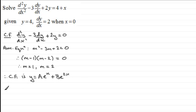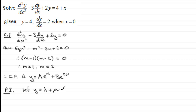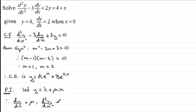Next we want to work out a particular integral — PI for short. Looking at the right-hand side, it's a linear function: 4 plus x. So what we do is let y equal a constant lambda plus another constant mu multiplied by x. That's our linear particular integral taking on that form. Differentiating, dy/dx equals mu, and the second differential d²y/dx² equals zero.